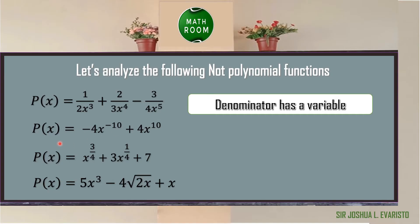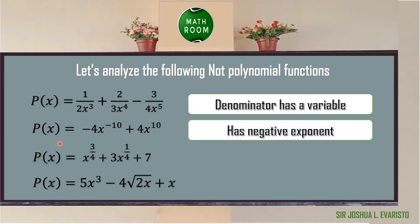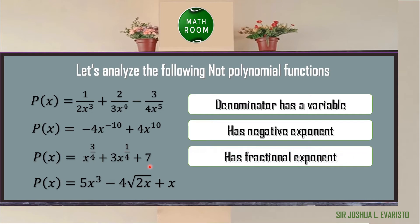For number two, p(x) = −4x⁻¹⁰ + 4x + 4x¹⁰. This is not a polynomial function since we have a negative exponent (−10). For number three, p(x) = x^(3/4) + 3x^(1/4) + 7. This is not a polynomial function since we have a fractional exponent.